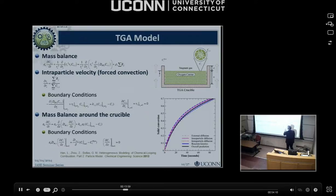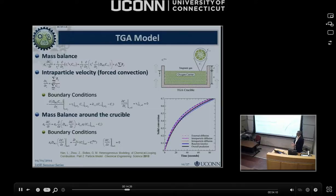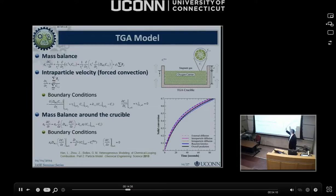We went one step further and simulated TGA — thermogravimetric analysis — where you have a very small sample inside the crucible, you oxidize it, and there is no real convection, only forced or thermographic convection. We simulate the overall selectivity of the reaction and how diffusion — particle diffusion, layer diffusion — affects the selectivity. We published that to show that at least for our experiments, everything is reaction controlled and not diffusion-limited, but we had to use a more detailed model to prove that.